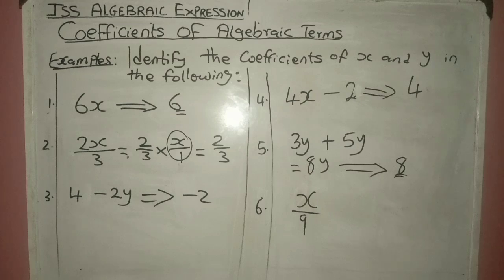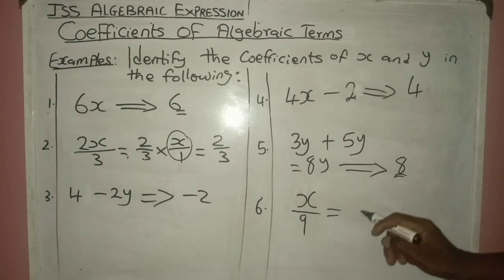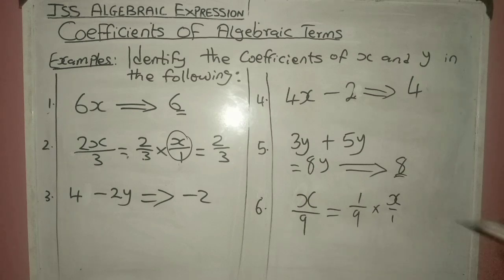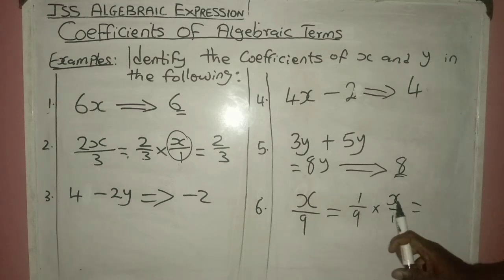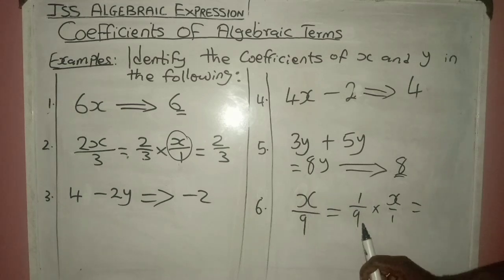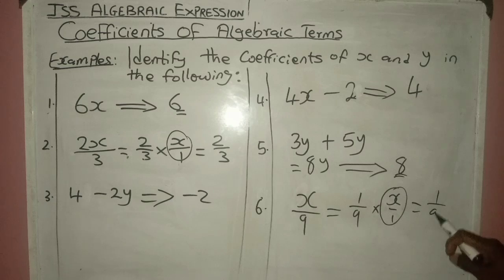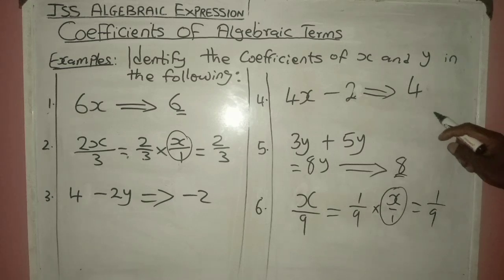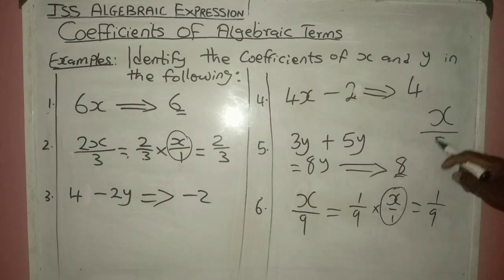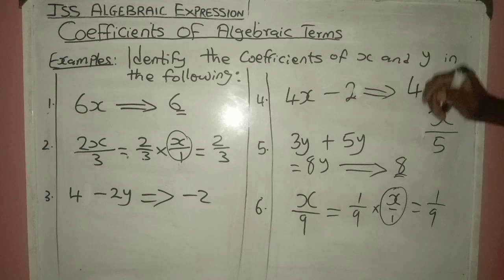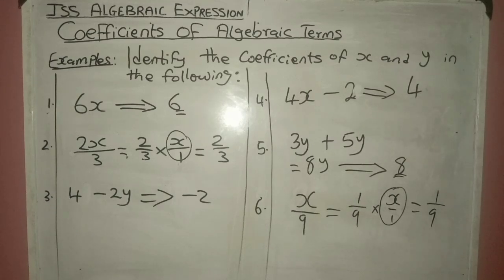Now looking at x over 9, the coefficient of x — I can rewrite this as 1 over 9 multiplied by x over 1. When I say 1 times x, that gives me x, and 9 times 1 gives me 9. So the coefficient of x here is 1 over 9. Can you tell me the answer to x over 5? Of course, the answer will be 1 over 5. That is the coefficient of that particular expression. And that is all about the coefficients of terms in algebra.